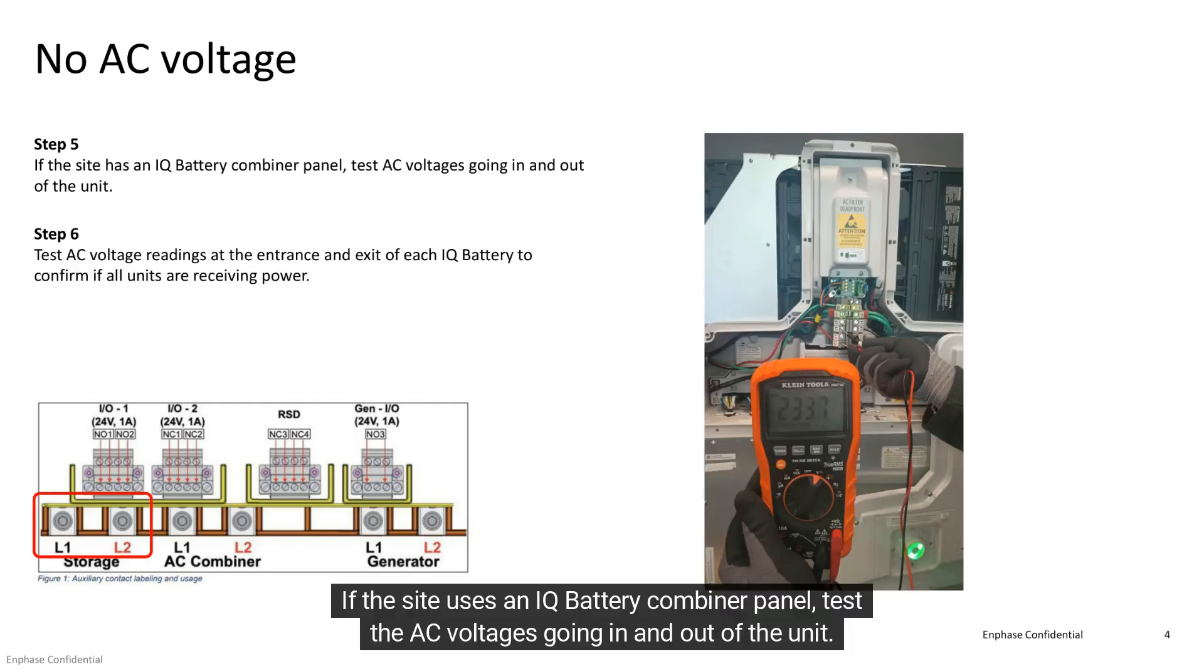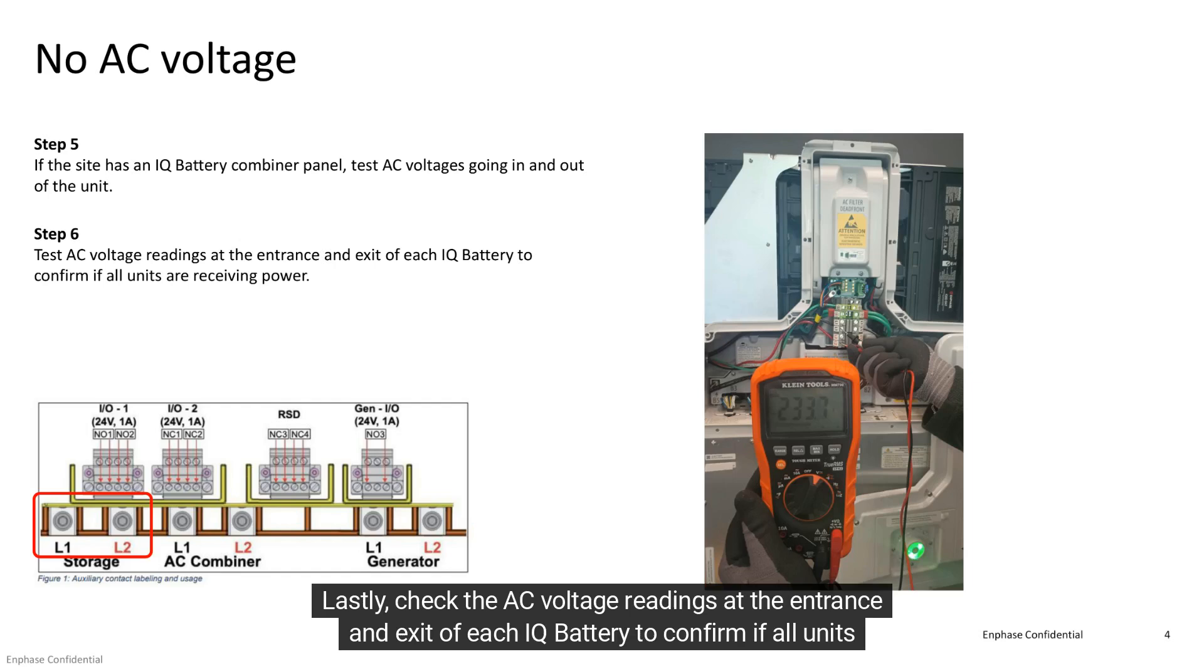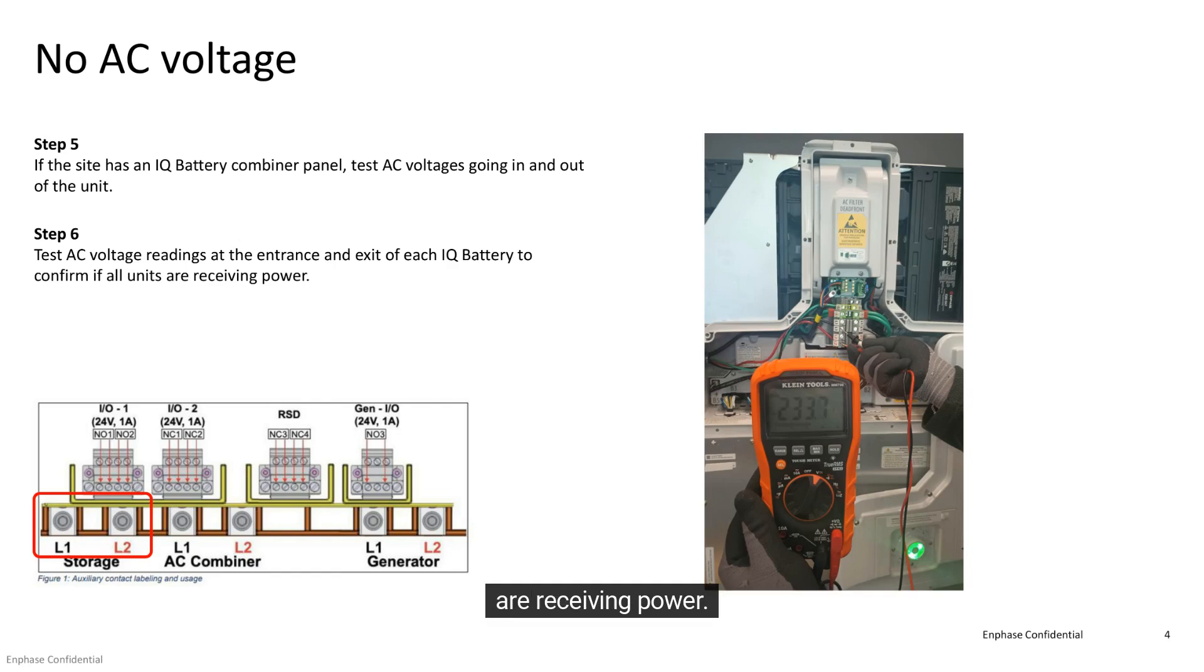If the site uses an IQ Battery combiner panel, test the AC voltages going in and out of the unit. Lastly, check the AC voltage readings at the entrance and exit of each IQ Battery to confirm if all units are receiving power.